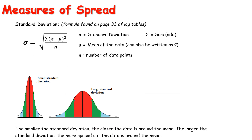The standard deviation formula is in your log tables — make sure you know where it is and how to use it to calculate standard deviation the long way if required. However, work with your calculator if you can. Standard deviation is how far the data is away from the middle, or the mean. Something with a small standard deviation has a narrow curve, while a larger standard deviation gives a much flatter, more spread-out curve.